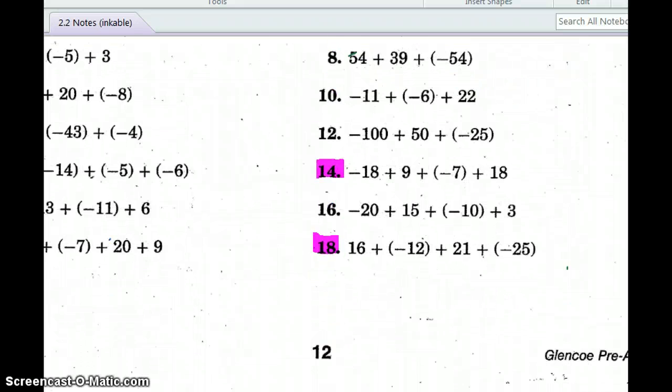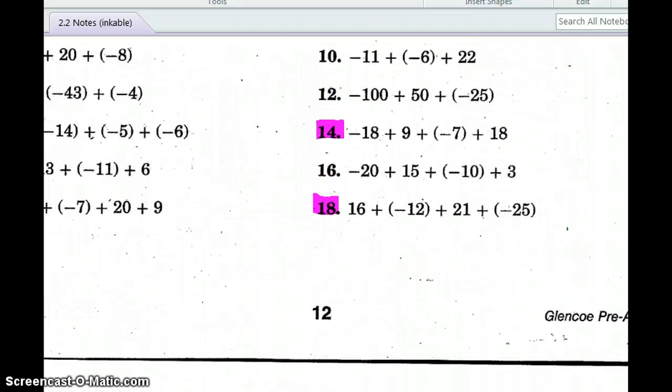Now I have opposite signs, so I have to subtract. 7 from 11 is going to give me 4, and I'm going to keep it negative because 11 is greater than 7, so it's a negative 4 as my final answer. Let's jump down to 14. What do I do when there's 4 of them? That's when we want to rearrange.